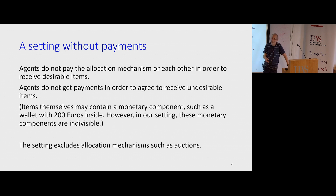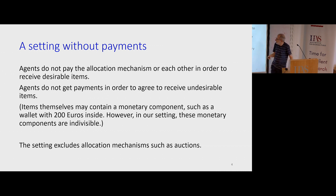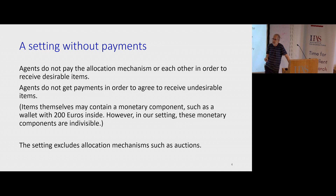Also, if items are undesirable, agents are not paid in order to agree to receive them. This doesn't mean no money is involved — items themselves can have money as part of them. For example, an item can be a wallet with some money in it, but it's treated as one item; you don't pay for getting this wallet based on the amount of money in there. There's a whole class of allocation mechanisms, like auctions, in which the decision of which agent gets which item depends on how much they are willing to pay. We are not doing this here.